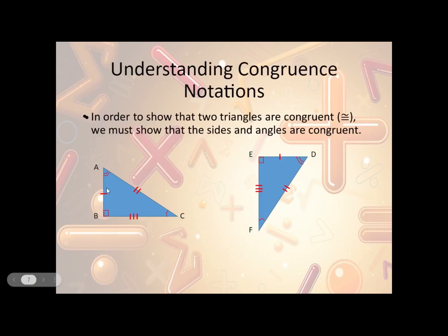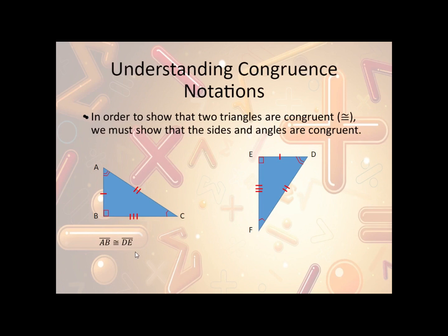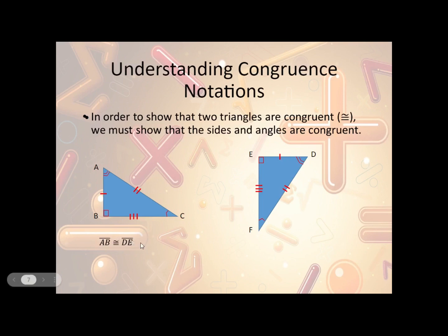We have AB here with a single dash and DE here with a single dash, so those are congruent. Notice I said AB is congruent to DE — not AB is congruent to ED, because that is not a true statement. In order to make a true statement, I need to follow along with the corresponding parts, going from the endpoint with the double arc to the endpoint with the 90-degree angle. So it's AB is congruent to DE, BC is congruent to EF, and AC is congruent to DF. Those show that all the parts are congruent.